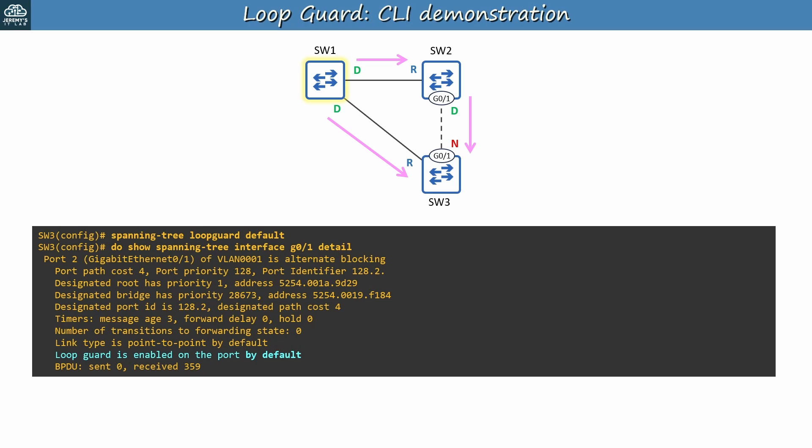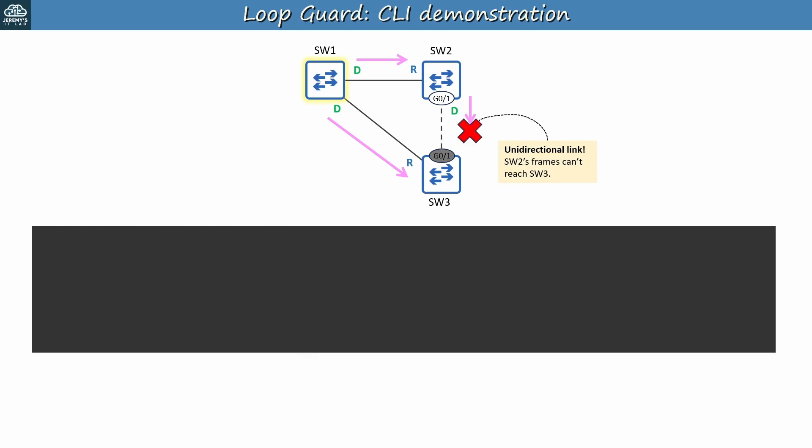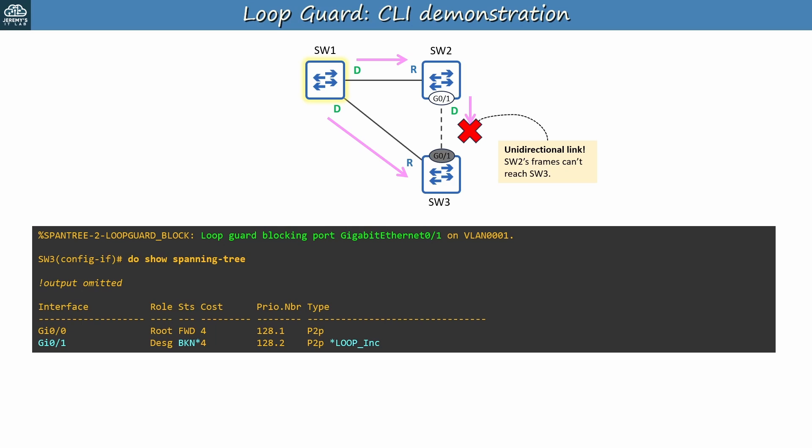Currently all links are operational and SW3 G0-1 is receiving BPDUs from SW2. But if the link connecting them becomes unidirectional, this message is shown in the CLI: 'Loop Guard blocking port, Gigabit Ethernet 0-1.' In the output of 'show spanning tree', G0-1's status is BKN (broken) and it also says 'Loop Inc' (loop inconsistent). The port is blocked because it stopped receiving BPDUs — perhaps there's a sharp bend in one of the fibers that degraded the signal, preventing SW2's BPDUs from reaching SW3.